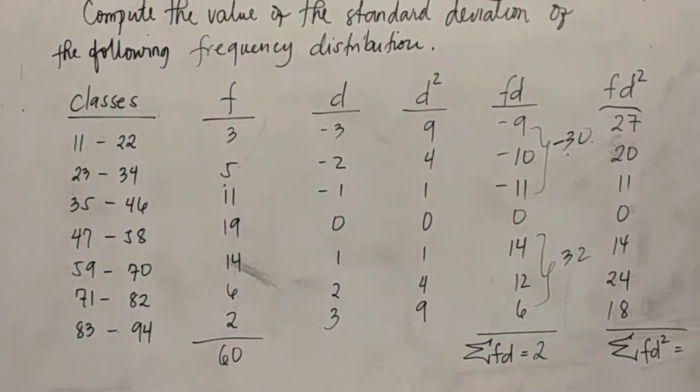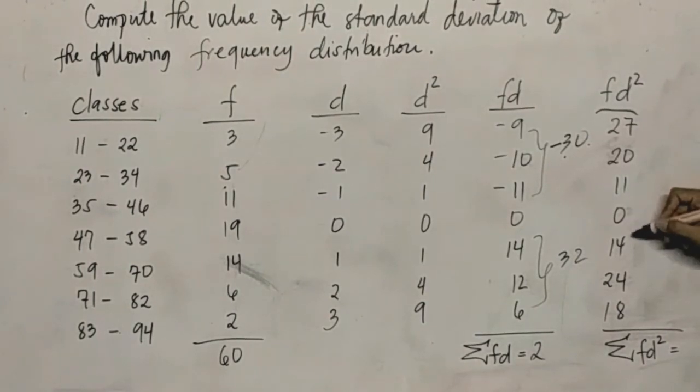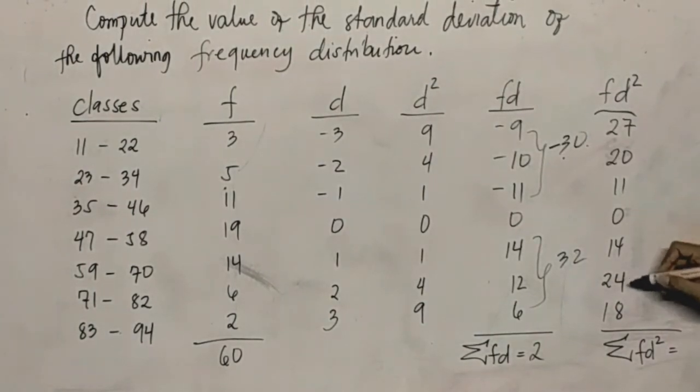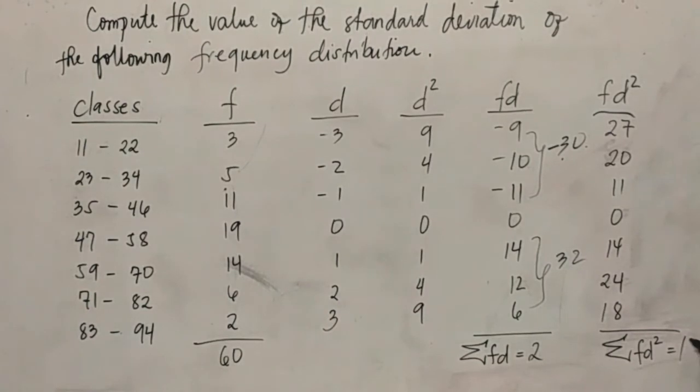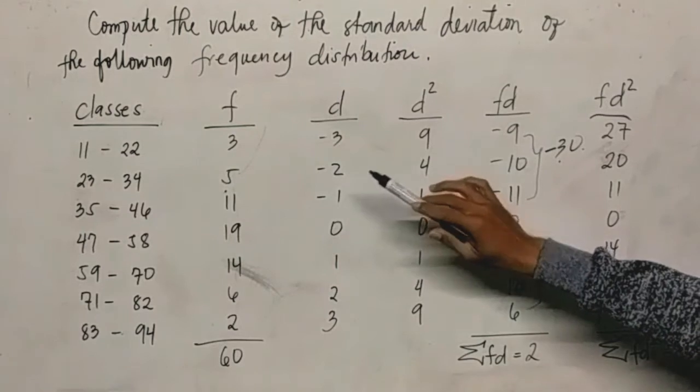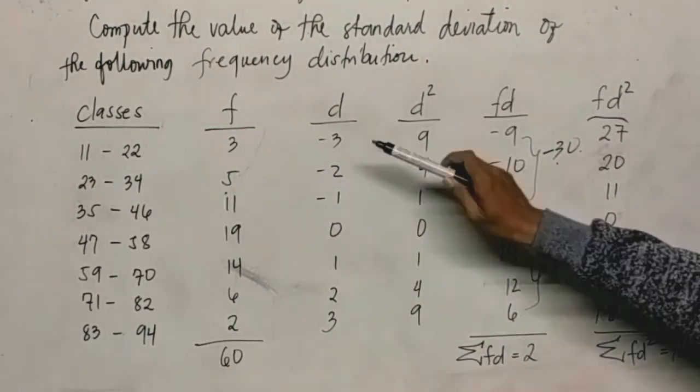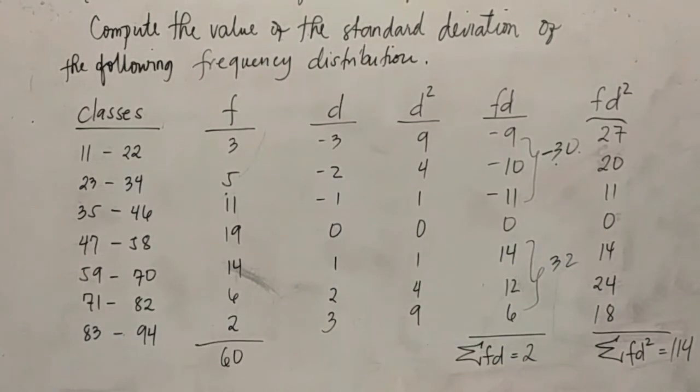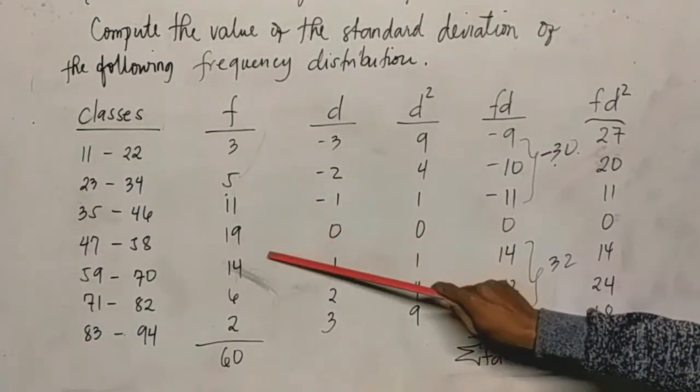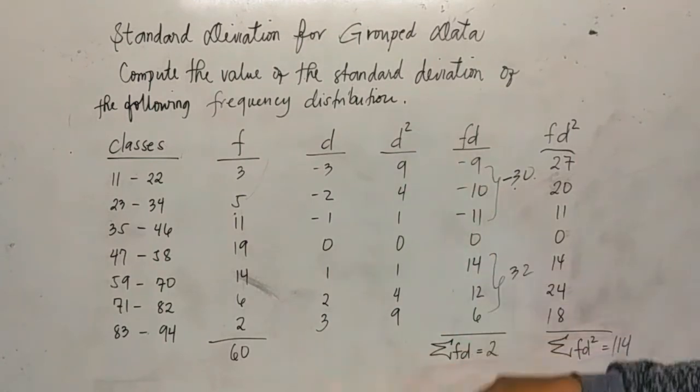Now let's add the summation of fd squared. The answer would be 114 when we add them all: 27 plus 20 plus 11 plus 0 plus 14 plus 24 plus 18 equals 114. Don't forget to add the frequency. The frequency total would be 60 when we add all of them: 3 plus 5 plus 11 plus 19 plus 14 plus 6 plus 2 equals 60. So if we notice, we've now got all the values needed for the formula.